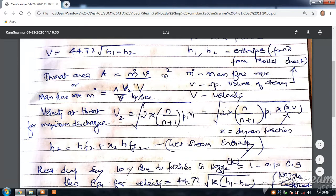Throat area A is equal to m dot v divided by capital V, where m dot stands for the mass flow rate, small v stands for the specific volume of steam. This you will also get from the Moller discharge or from the steam table, and V stands for the velocity. So if you know this equation, you can find out the mass flow rate or the throat area either way.